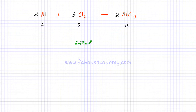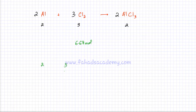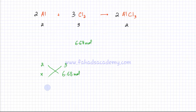If I had 6.68 moles of chlorine, I want to find out how much aluminium would be needed to react with 6.68 moles. I can use ratios — I know that two aluminiums react with three molecules of chlorine. So if I have 6.68 moles of chlorine, I would need x moles of aluminium. Using the unitary method, that gives me 3x = 6.68.